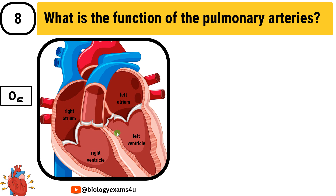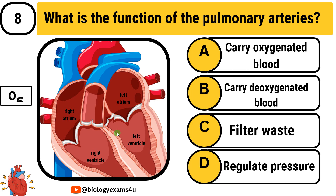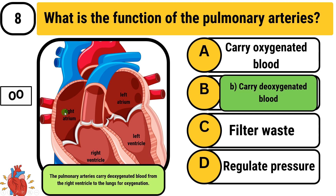Question number 8: What is the function of the pulmonary arteries? Option A: carry oxygenated blood. Option B: carry deoxygenated blood. Option C: filter waste. Option D: regulate pressure. The answer is carry deoxygenated blood. The pulmonary artery carries deoxygenated blood from the right ventricle to the lungs for oxygenation.